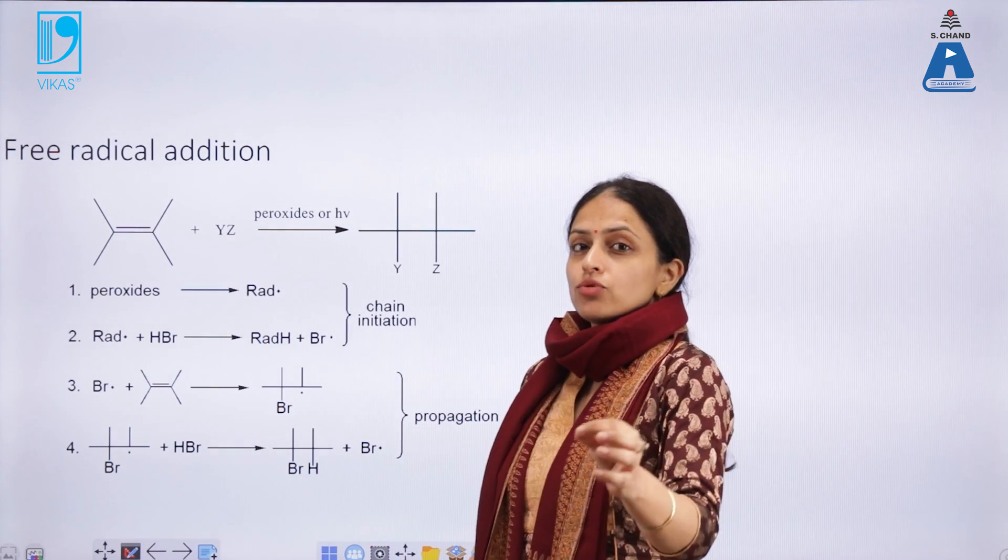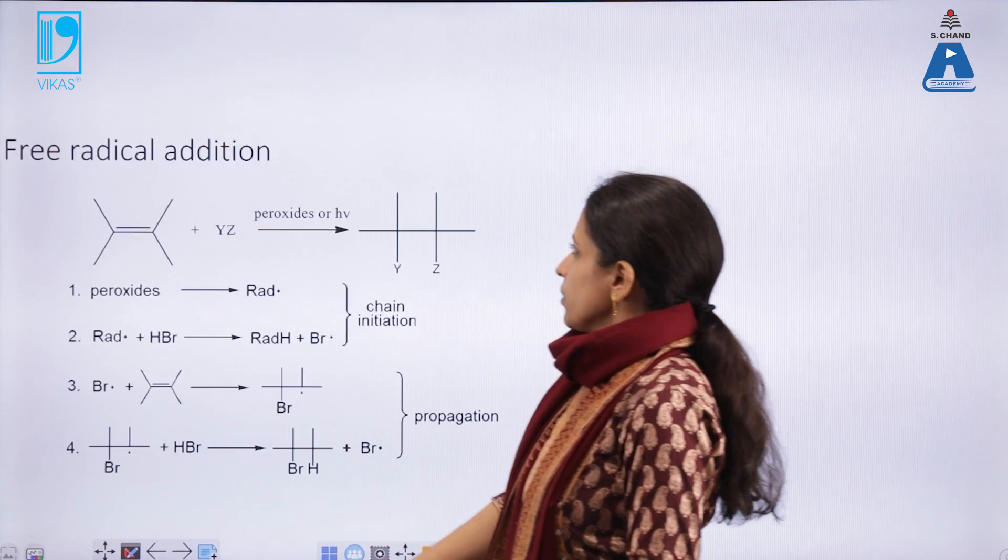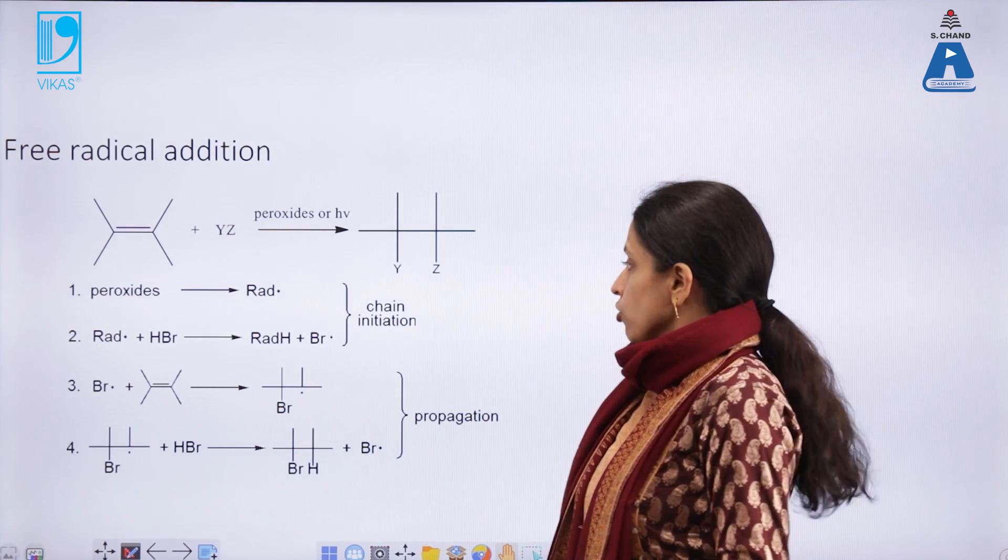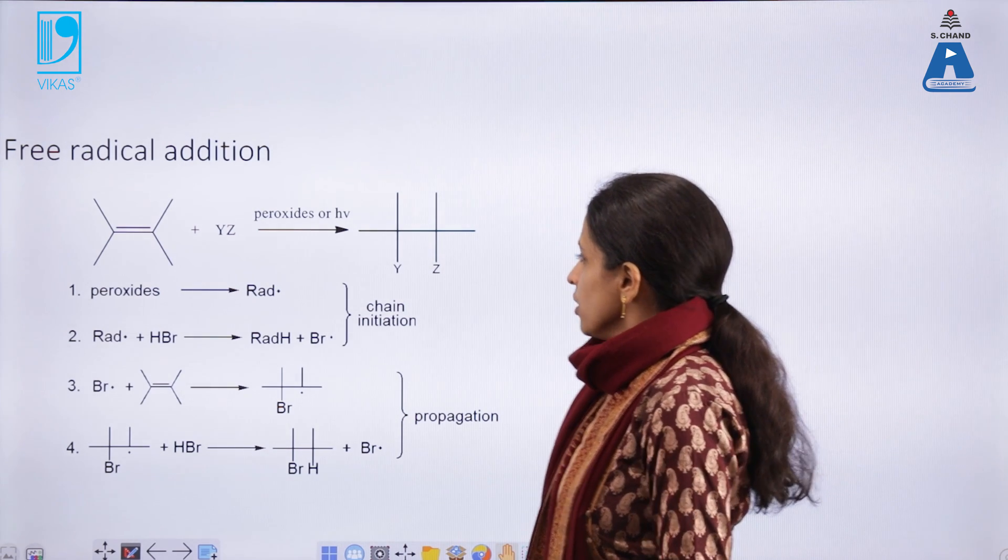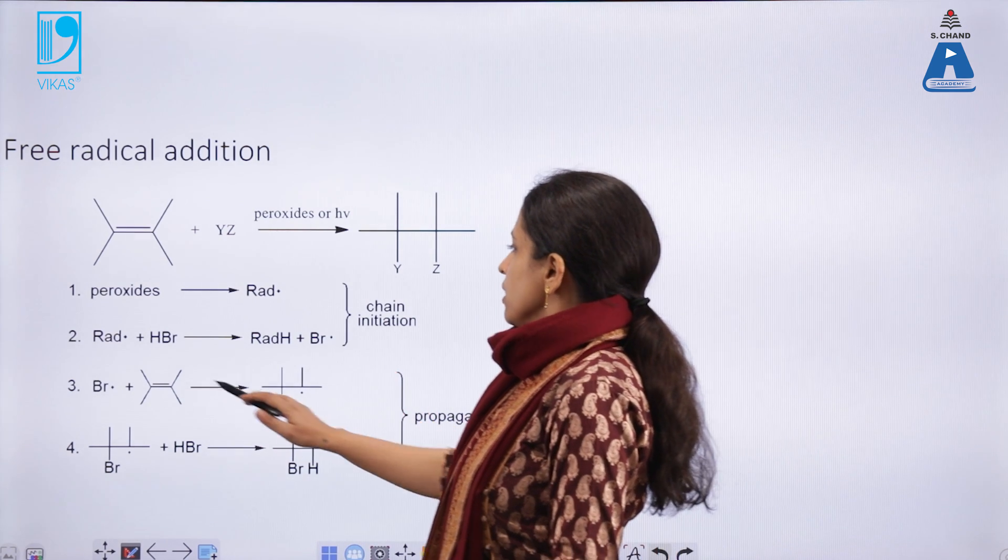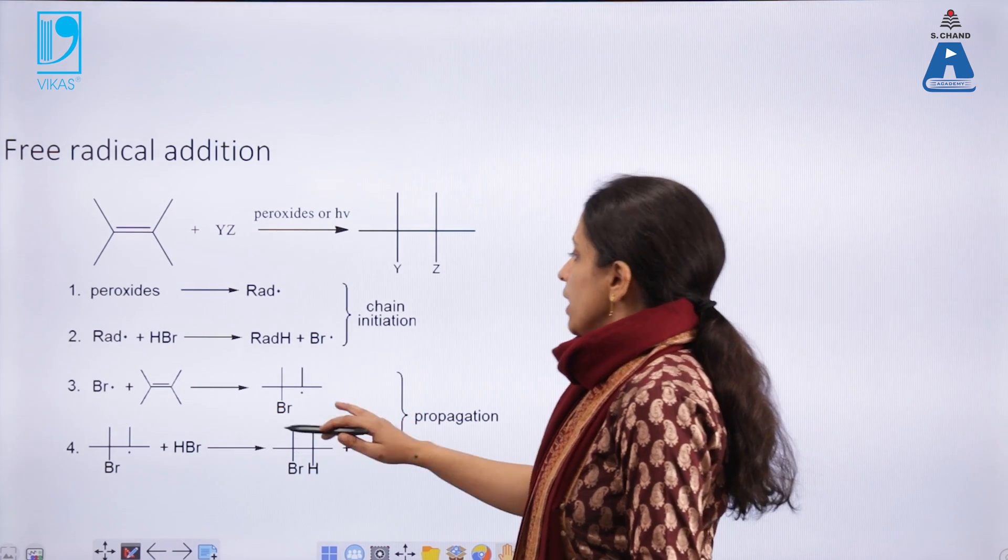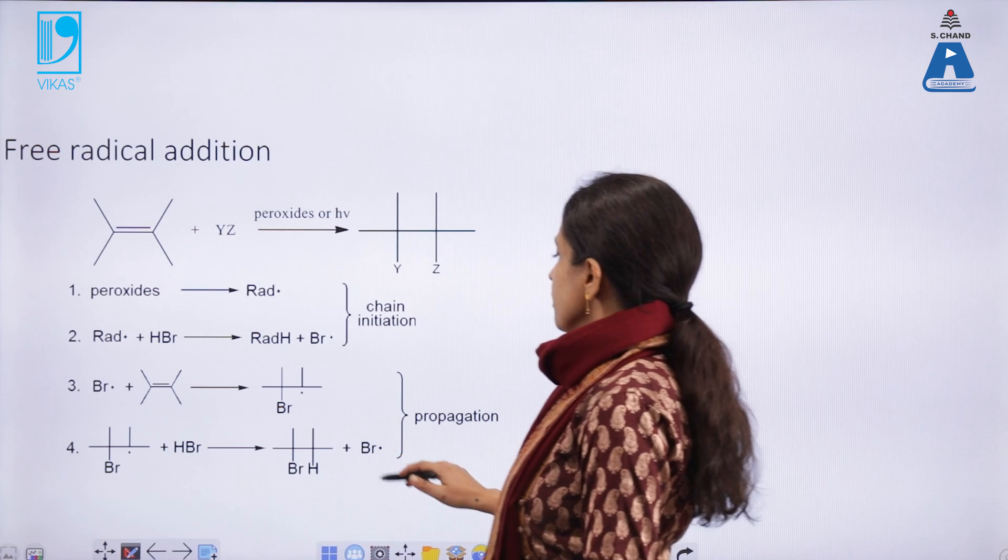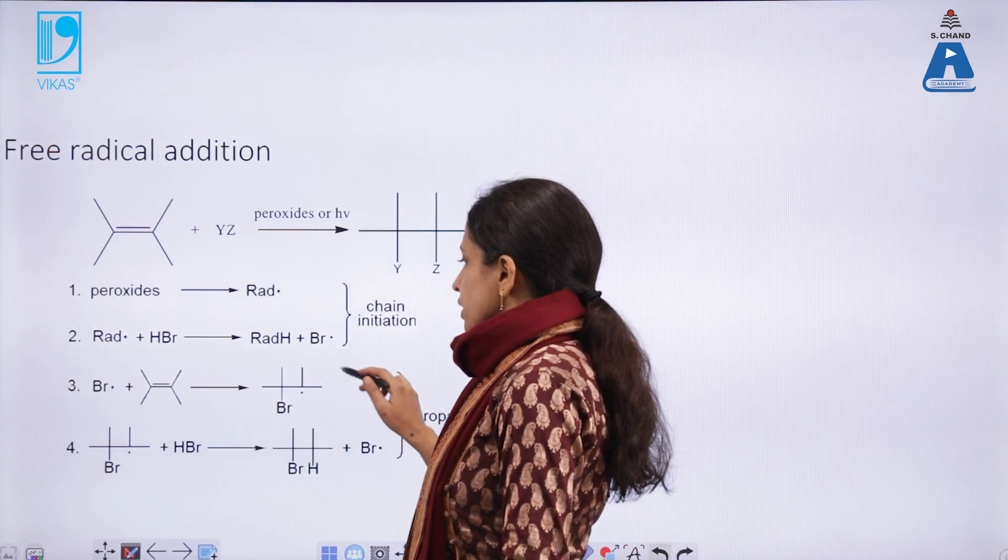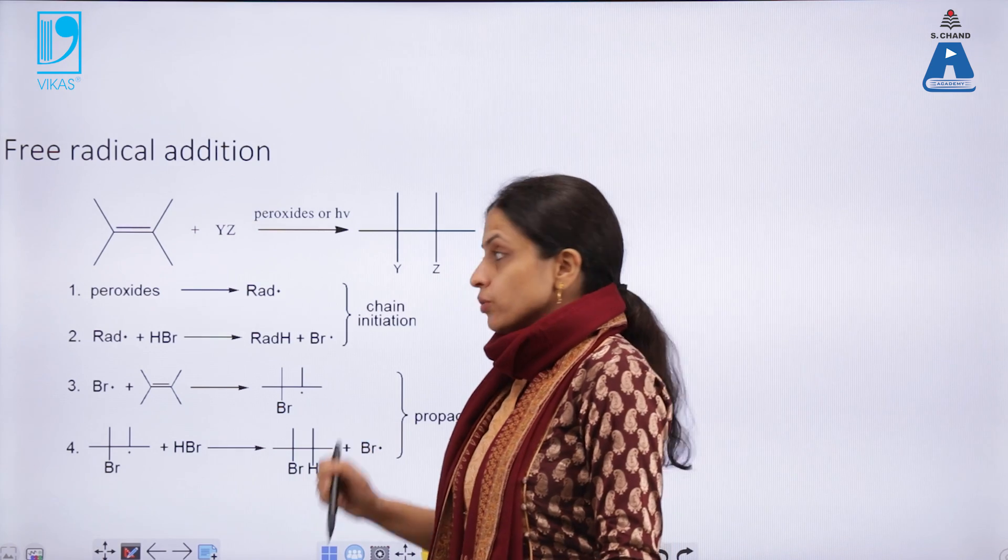If the addition happens through the free radical mechanism, then Markovnikov's rule is not followed and you get an anti-Markovnikov's product. Why anti-Markovnikov's product? Because here the intermediate is a radical itself. First, the Br radical is getting attached and the substrate is getting the radical nature. In the second step, the hydrogen radical is added and then you get the product. The more favored intermediate is the one which gives the more stable radical, and that will be the more substituted radical.